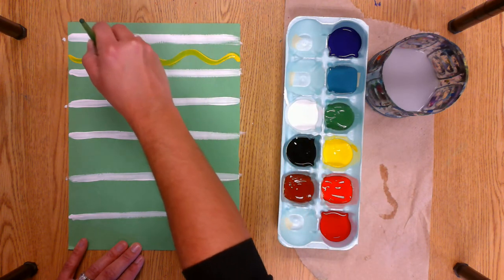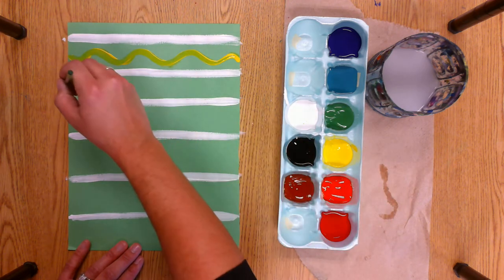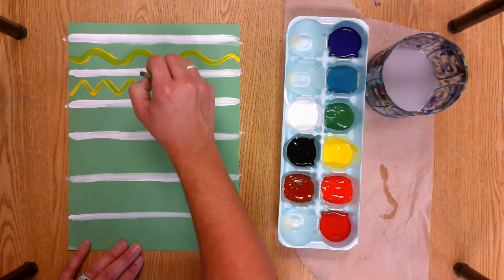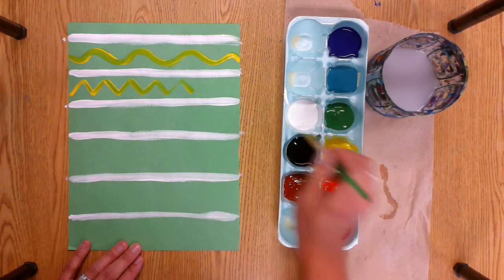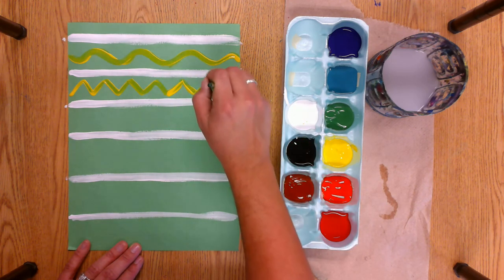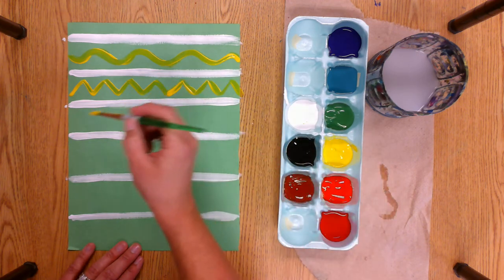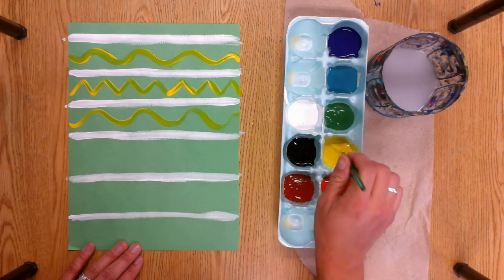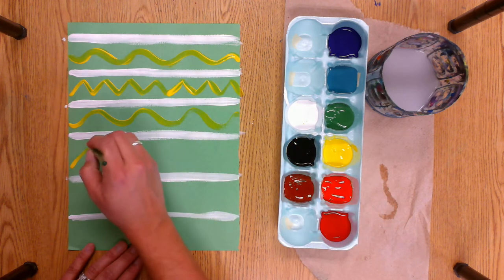And you might have to go over your color a couple times if it doesn't show up. And then maybe in this one I could do a zigzag line. I might have to put my paint on a little bit more thick with this yellow because it's not showing up very well. So see how I'm creating a pattern with my yellow paint as well.